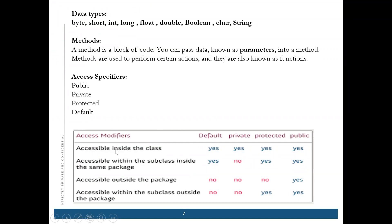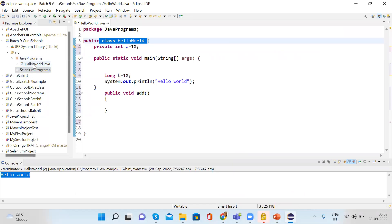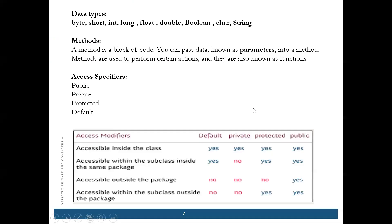Protected is accessible inside the class, within the subclass, and inside the same package. So protected can be accessed only within the package — inside that package we can have many classes and that's where we can access protected members. The fourth access specifier is default, which is also similarly accessible within the subclass and inside the same package. So these are the four access specifiers.